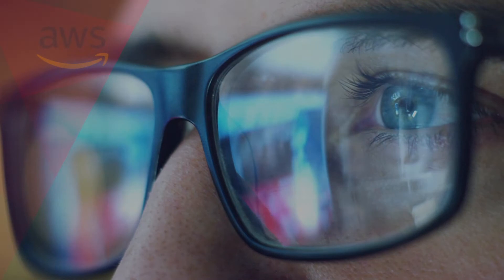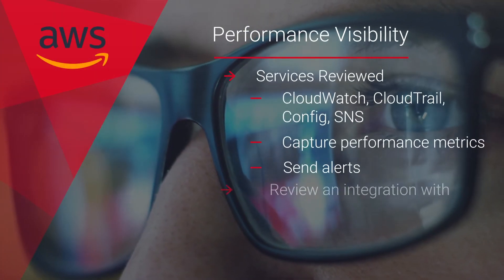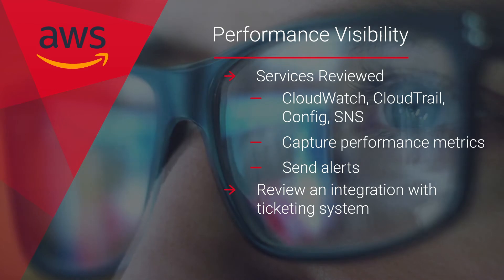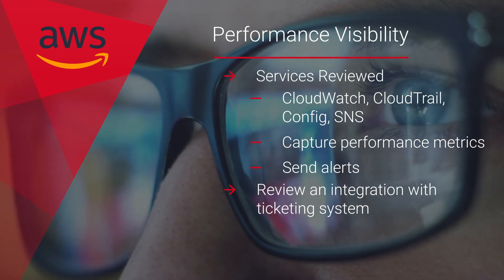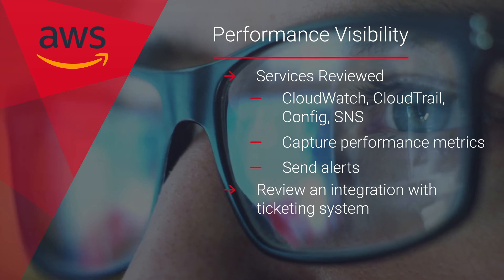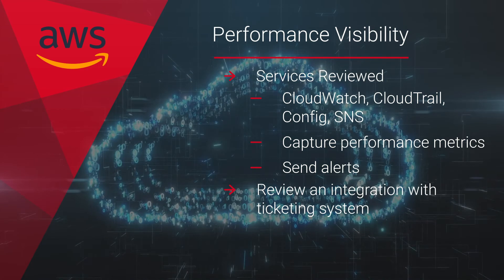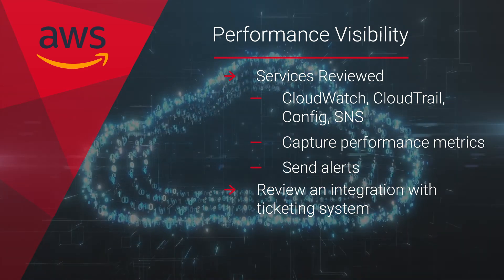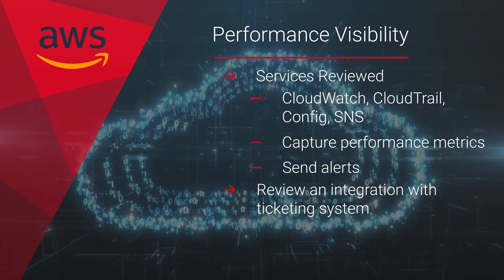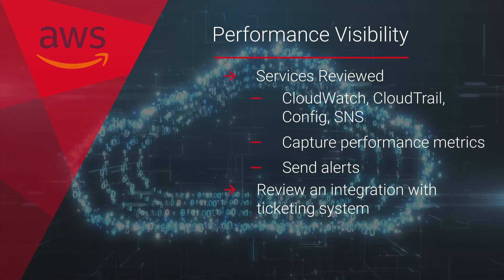Another important aspect is the visibility into performance. Performance monitoring must be enabled to ensure this visibility. Services such as CloudWatch, CloudTrail, Config, SNS, etc. are reviewed for capturing performance metrics and sending alerts when parameters are outside of expected range. We further review, where applicable, integration with some form of ticketing system to tackle incidents and events generated by the AWS cloud native services.